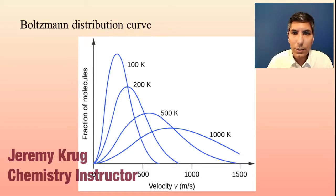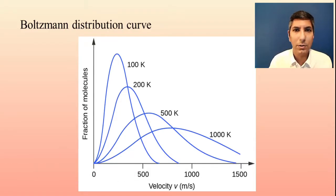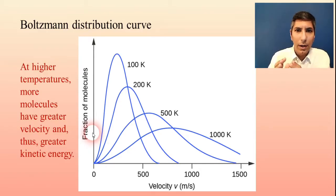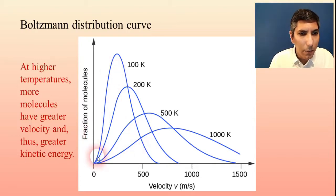Now here we have a graph that you're going to see a few times over the course of AP chemistry. This is called a Boltzmann distribution curve, and what you're seeing here is the distribution of the rates of the molecules of a gas as you change the temperature. On the left side here we have a curve that represents 100 Kelvin, and that's very cold. Notice that almost all of the molecules are moving very slowly. There are just a few molecules that are moving faster than 500 meters per second.